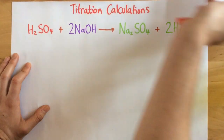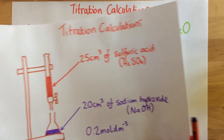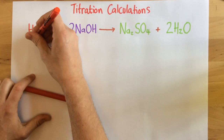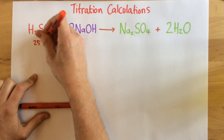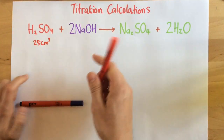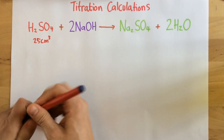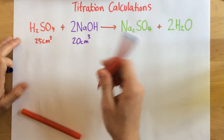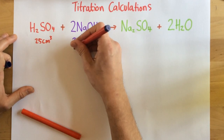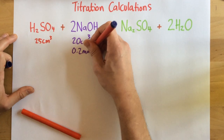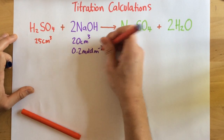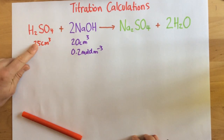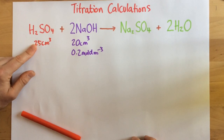The next thing I'm going to do is write down the information from my experiment underneath each part. I've got 25 cm³ of acid and 20 cm³ of sodium hydroxide, and I've also got a concentration of 0.2 moles per dm³ for the sodium hydroxide. So I've got a volume and a concentration for the sodium hydroxide, but for the acid I only know the volume at the moment.